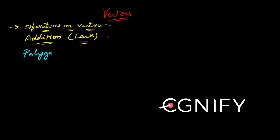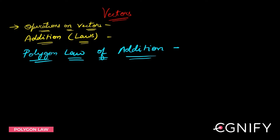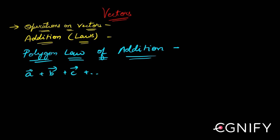Here we have the Polygon Law of Addition. We have already seen Triangle Law and Parallelogram Law, and how they tell the same thing in just different ways — they actually mean the same thing and one can be derived from the other. Polygon Law says if I have lots of vectors — a-bar, b-bar, c-bar, and so on, n vectors — you're taking two, three, or n such vectors and adding them up.